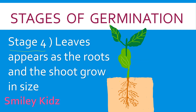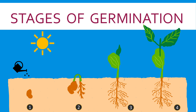Stage 4: Leaves appear as the roots and the shoot grow in size. Here we can see leaves have grown. After a few days, the cotyledon shrinks and falls off. We can see all the stages of germination. A baby plant has grown from a little seed.